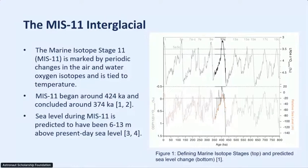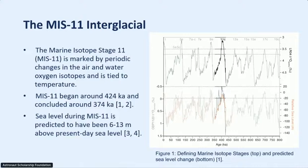The MIS-11 interglacial is marked by periodic changes in the oxygen isotope ratios in rock and ice. You can see in the graph to the right, I've blocked out some of the previous and more recent eras so you can focus on MIS-11. MIS-11 began about 474,000 years ago, lasted for 50,000 years, and ended around 374,000 years ago. During that era, we expect sea level to have risen between 6 and 13 meters — most of Florida would probably be underwater.